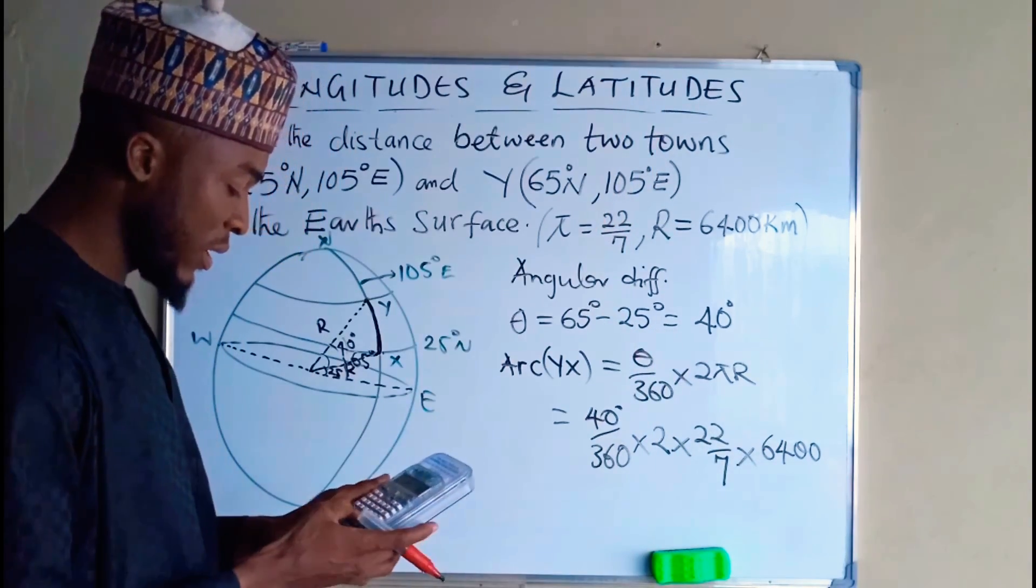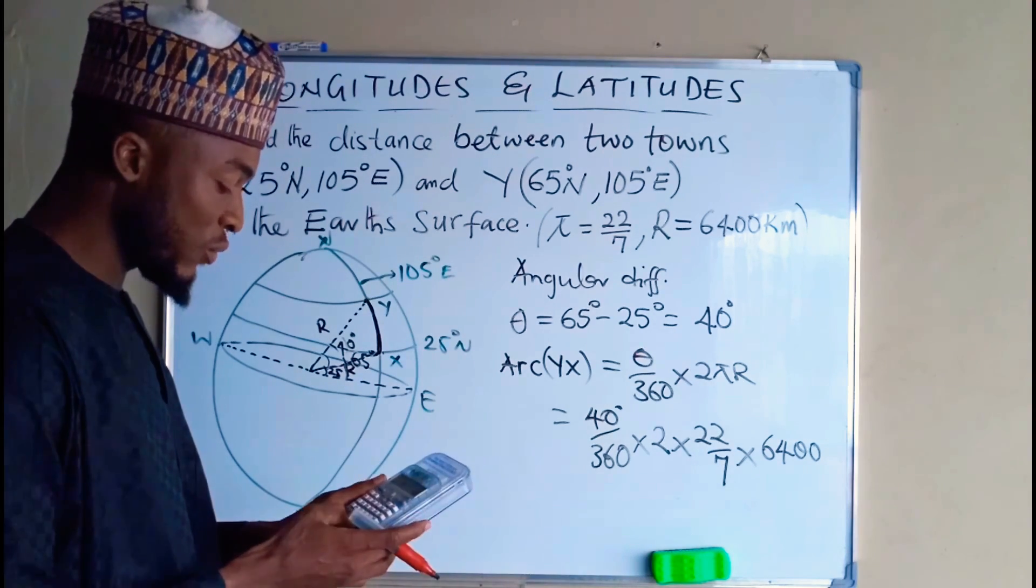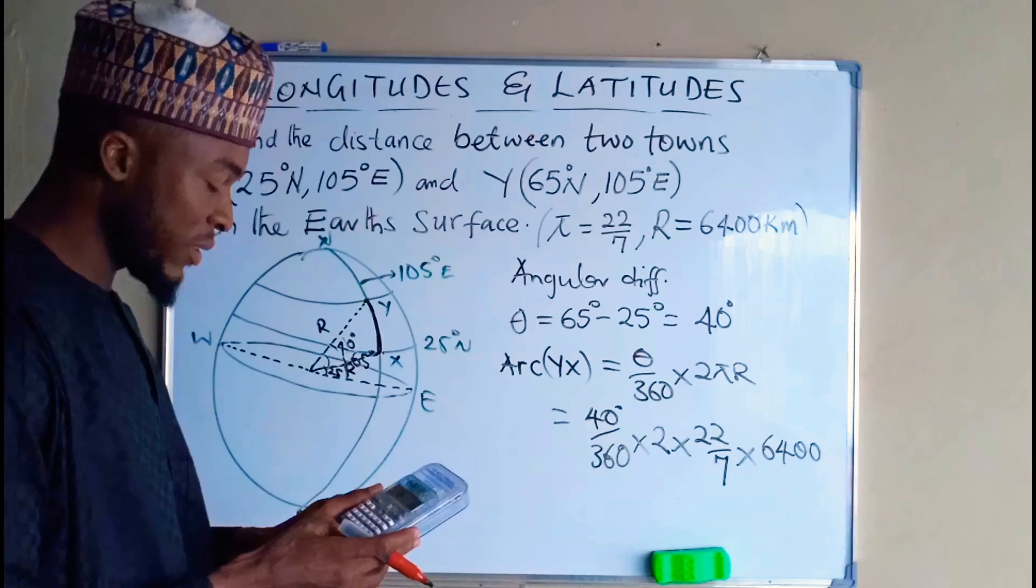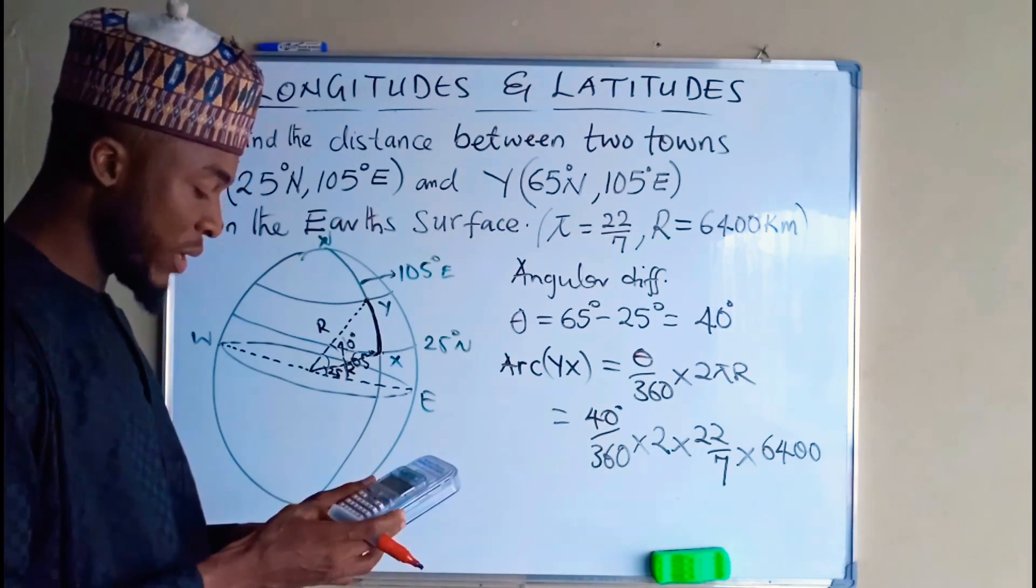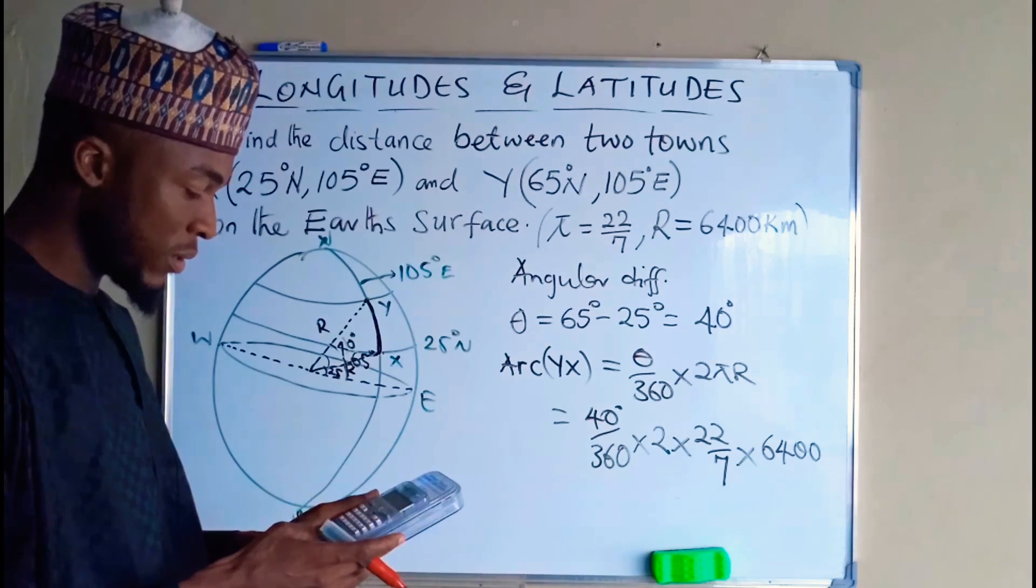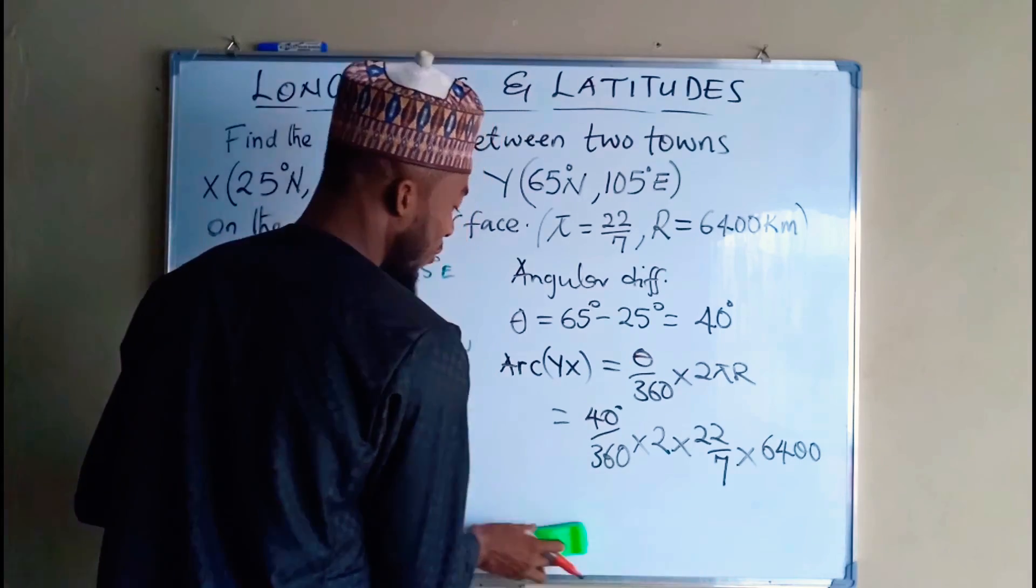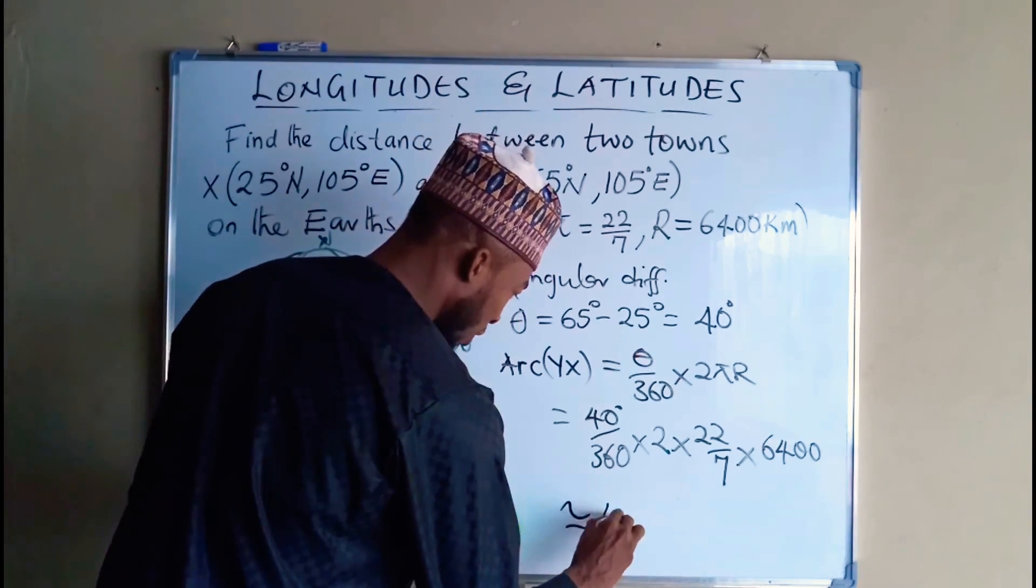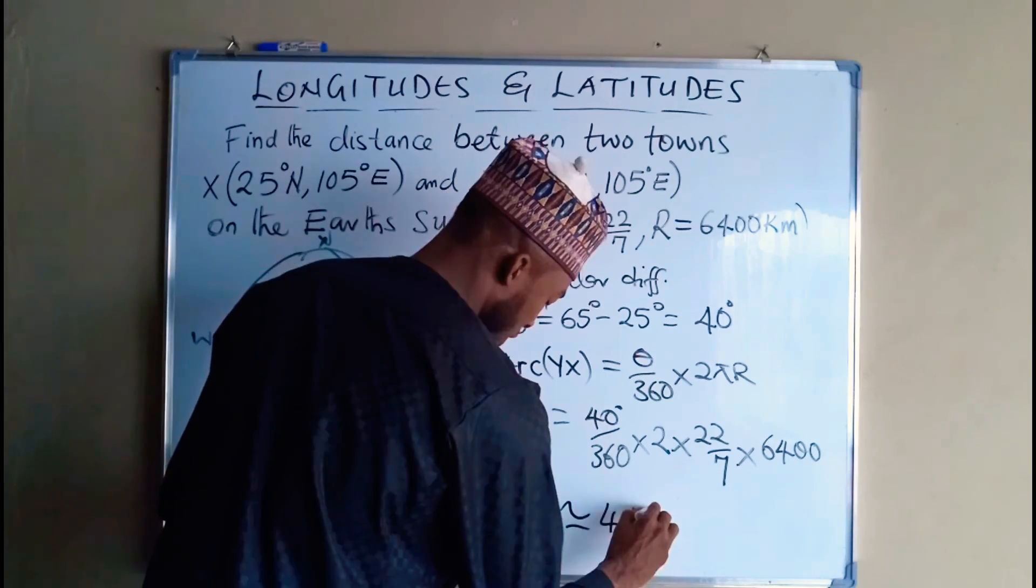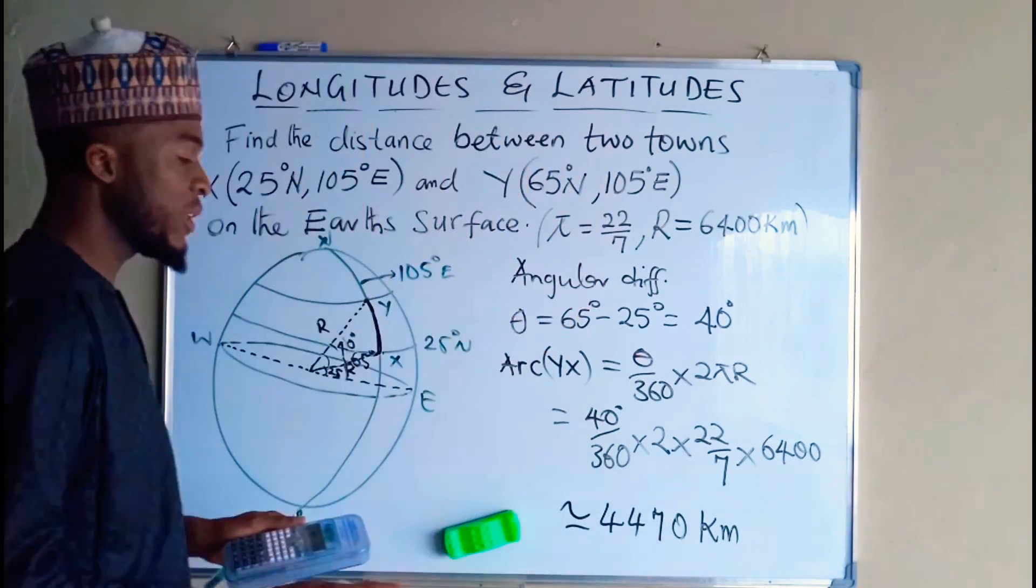40 multiplied by 2, multiplied by 22, and multiplied by 6400, divided by 360, divided by 7, and this is approximately equal to 4470 kilometers approximately.